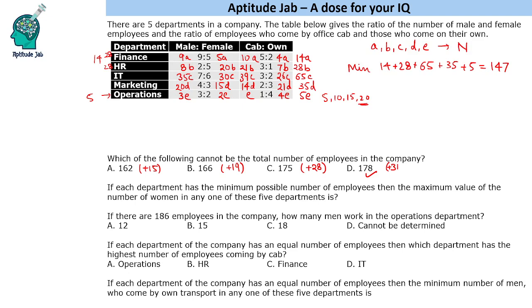In this case, we need to increase 31 employees. Let us see if we can increase 31 employees. We can increase 13 in operations but cannot make it 31. If we include 14 here, we can increase 15 and make it 29 — we cannot make 31. If we add 28 here and increase 5, it becomes 33. So in no case can we increase 31 employees and get 178.